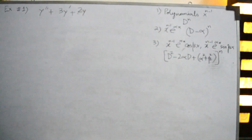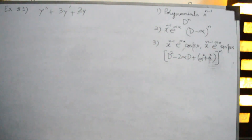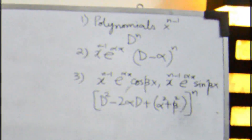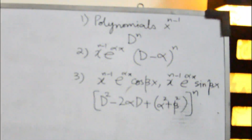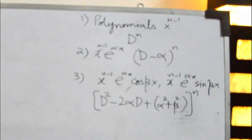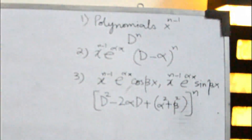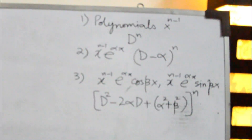We have three basic formulas to find out the annihilator operators of functions. First, if it is a polynomial up to order x to the power n minus 1, use the annihilator operator d to the power n. Second, if you have x to the power n minus 1 times e to the power alpha x, use d minus alpha to the power n. Third, if you have an exponential-polynomial with cosine or sine, use the corresponding formula based on n, alpha, and beta. Using these three formulas we can find the particular solution of a non-homogeneous equation.